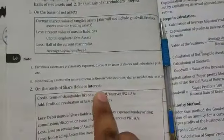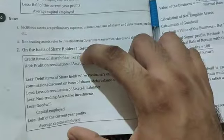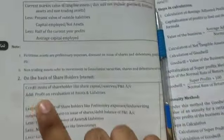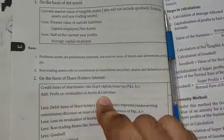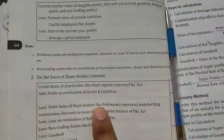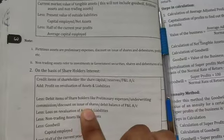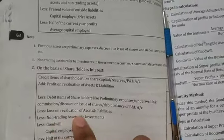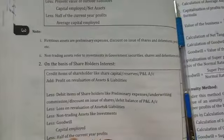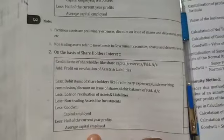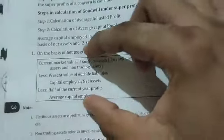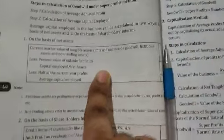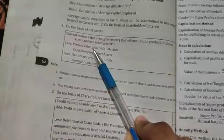Under the shareholders' interest method, debit items such as preliminary expenses, underwriting commission, discount on issue of shares, and debit balance of profit and loss are deducted. Also deduct loss on revaluation, non-trading assets, and goodwill, then minus half of the current year's profit to get average capital employed. The simpler method — assets minus liabilities minus half of current year's profit — equals average capital employed. This first method is used in our syllabus.